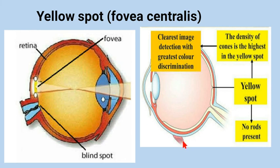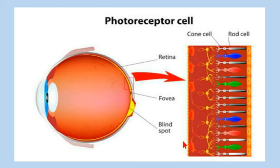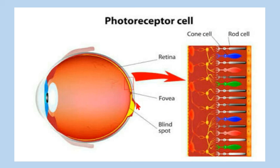In the yellow spot or fovea centralis, no rods are present. Rods help us see in dim light, while cones help us see in bright light. The cone cells come in three types — blue, green, and red — and they help us see different colors. The blind spot is the spot in the eye where there are no photoreceptors present.